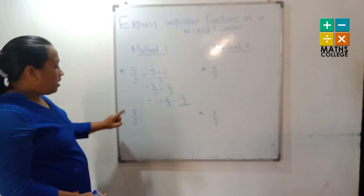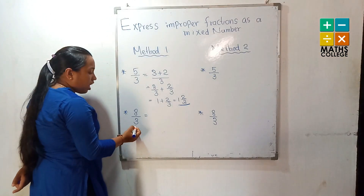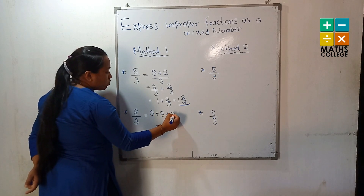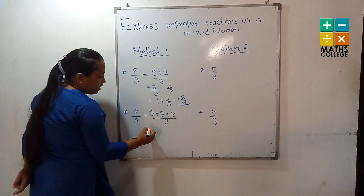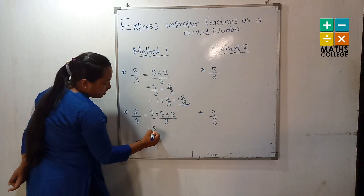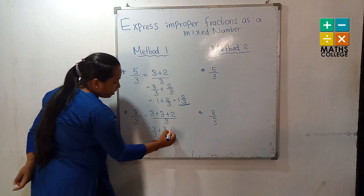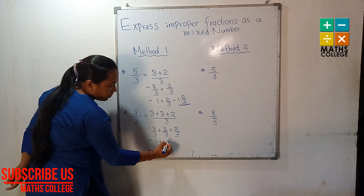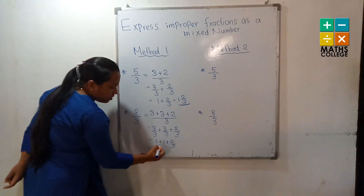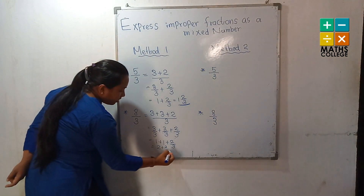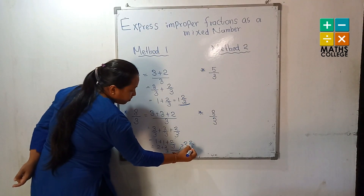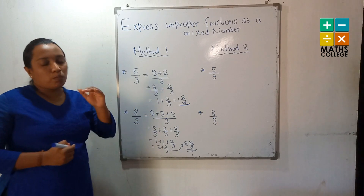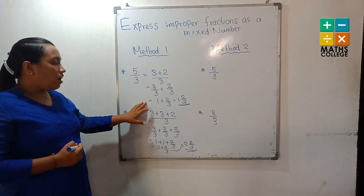Next example: eight upon three. How many threes for the eight? Two threes — three plus three is six, and two remains. We split it into three fractions: three upon three is one, and another three upon three is one, and two upon three. One plus one plus two-thirds: the answer is two and two upon three, converted to a mixed number.